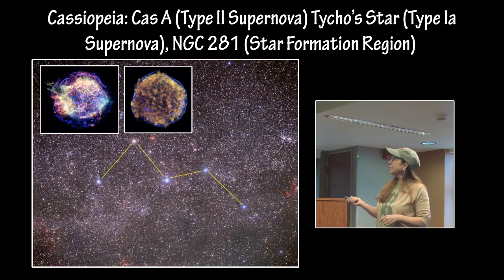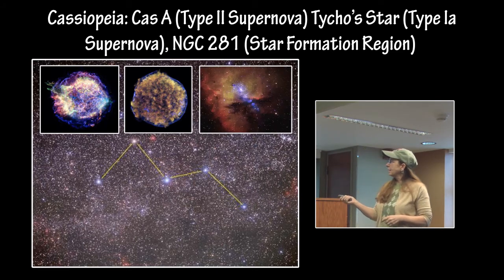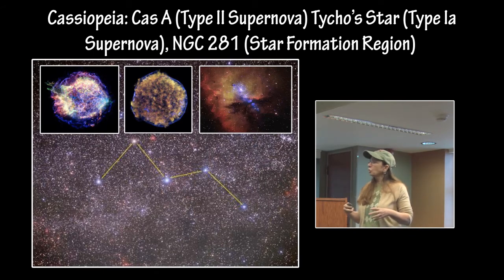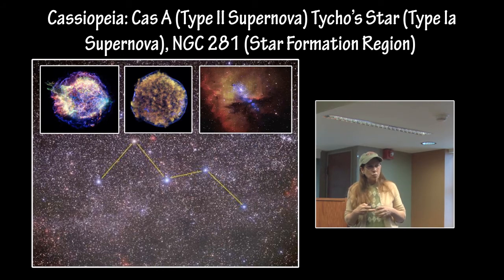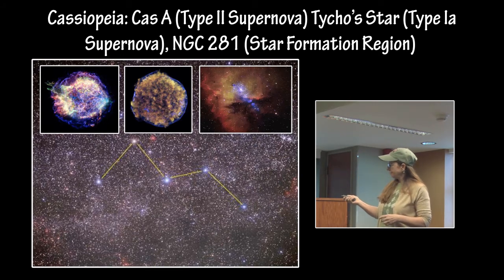We have a star formation area, NGC 281, and you can see right here there is an open cluster where a whole group of massive stars just formed out of that star-forming region.